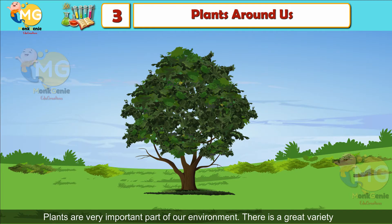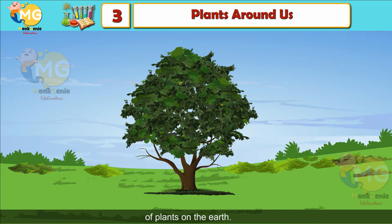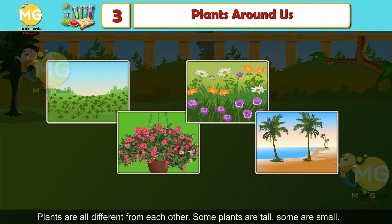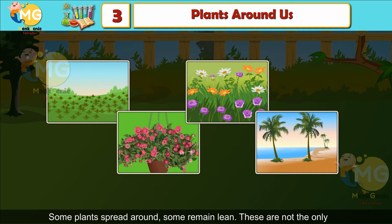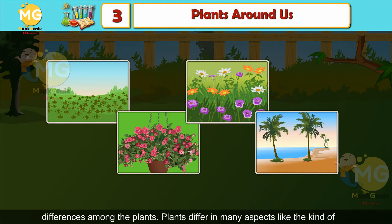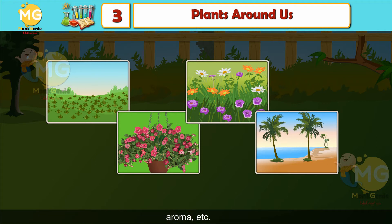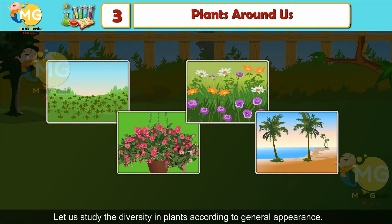Plants are a very important part of our environment. There is a great variety of plants on earth. Plants are all different from each other — some are tall, some are small, some spread around, some remain lean. Plants differ in many aspects like the kind of place they grow in, size, shape, kind of leaves, kind of stem, kind of flowers, aroma, etc.